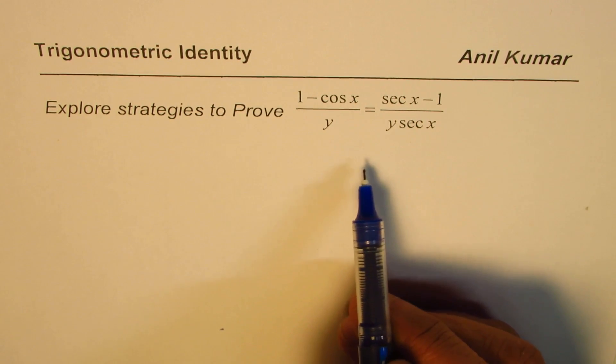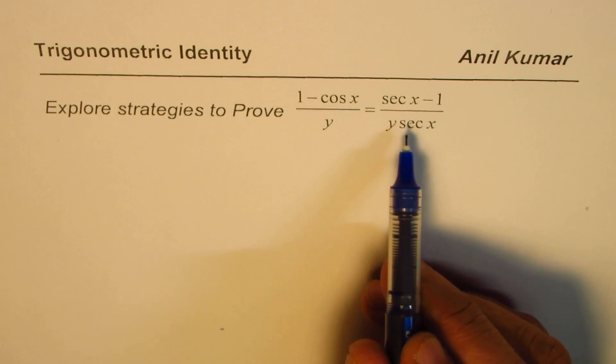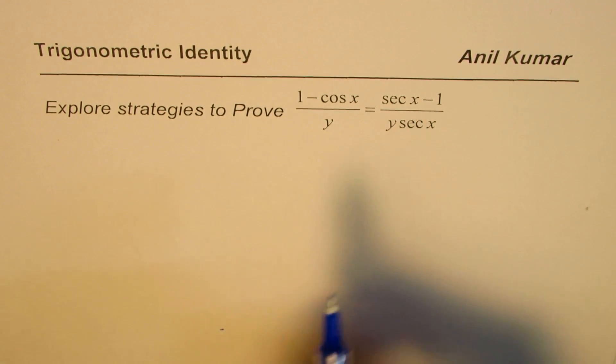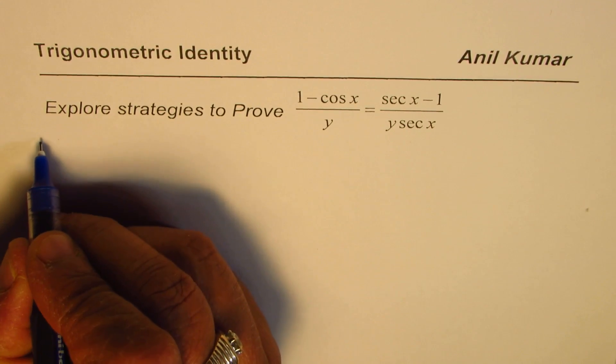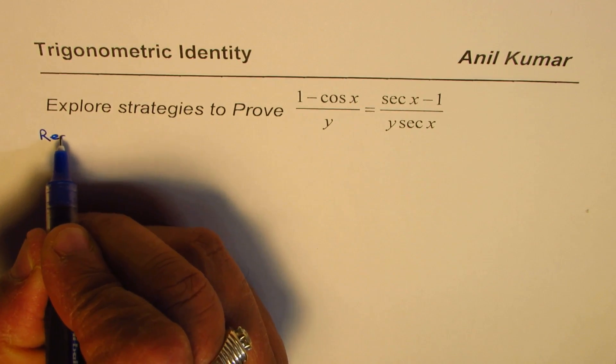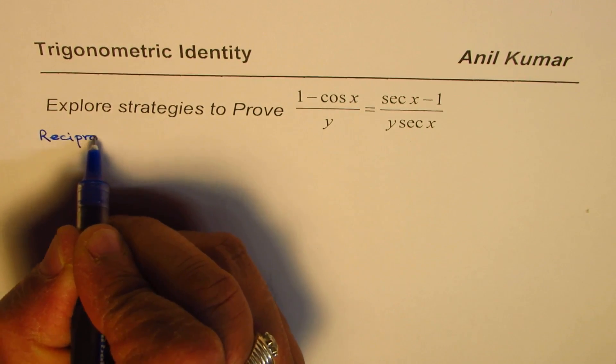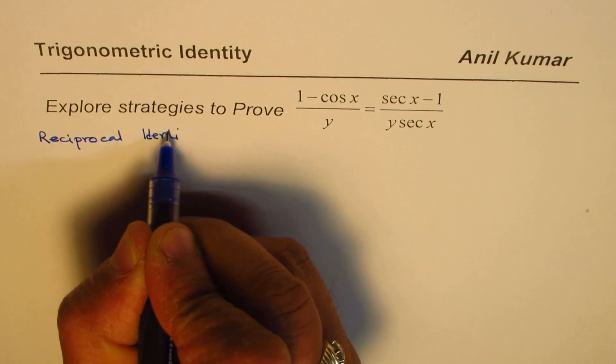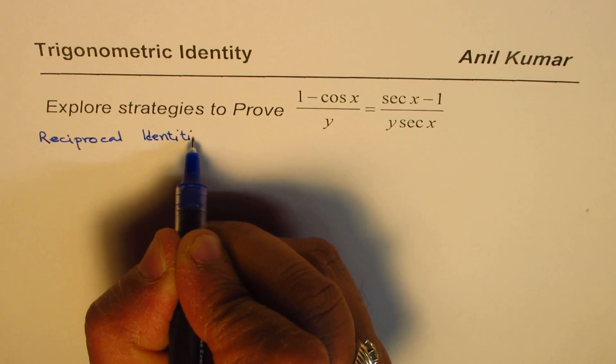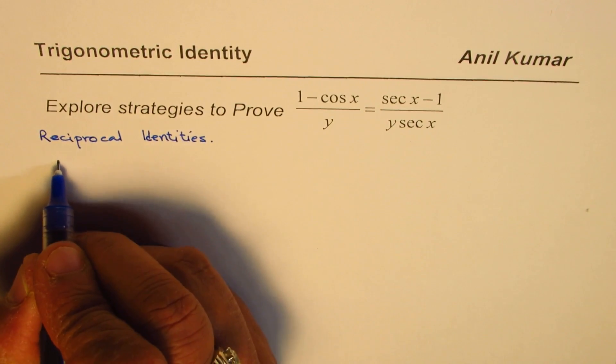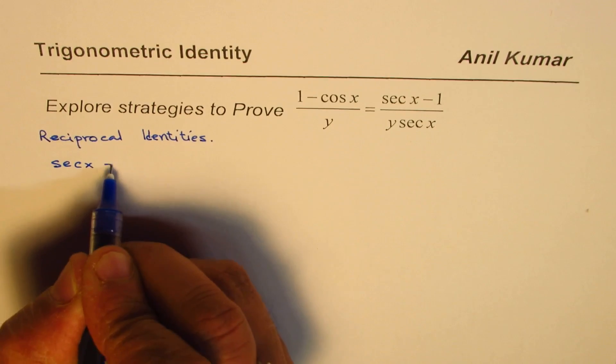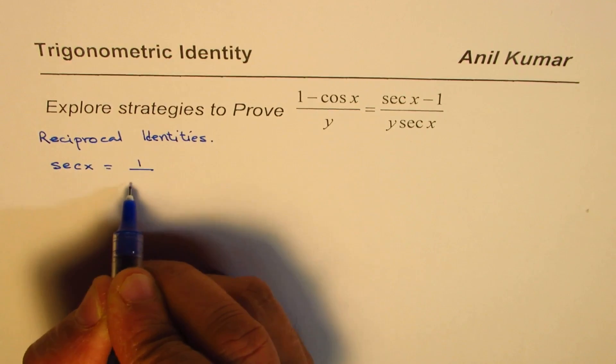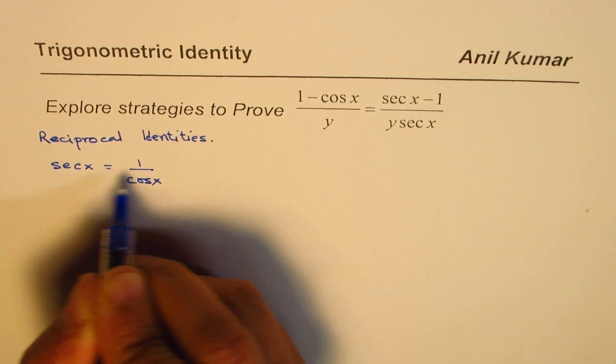To prove this identity, we are going to write down the strategy, which is about reciprocal identities. What is sec x? As you know, sec x equals the reciprocal of cos x.